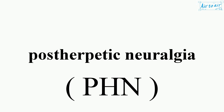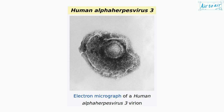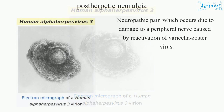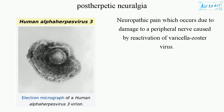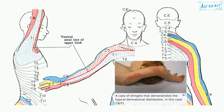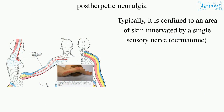Postherpetic Neuralgia is a neuropathic pain which occurs due to damage to a peripheral nerve caused by reactivation of varicella zoster virus. Typically, it is confined to an area of skin innervated by a single sensory nerve dermatome.